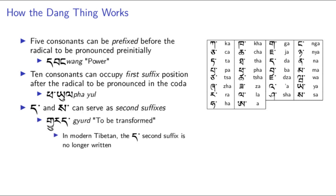Two characters — da and sa — could serve as a second suffix to be pronounced after the first suffix, like in geur. So the theoretical maximum number of characters in one syllable was eight: one radical, one vowel diacritic, one superscribed, two subscribed, one prefixed, and two suffixed. Although the actual maximum is seven, as two subscripts do not occur at the same time as a superscript.